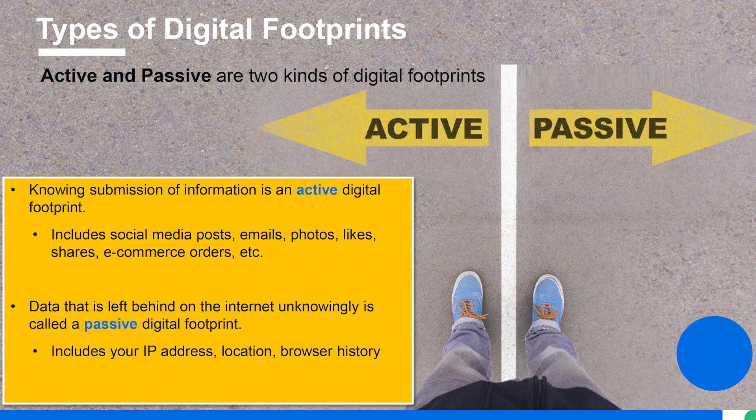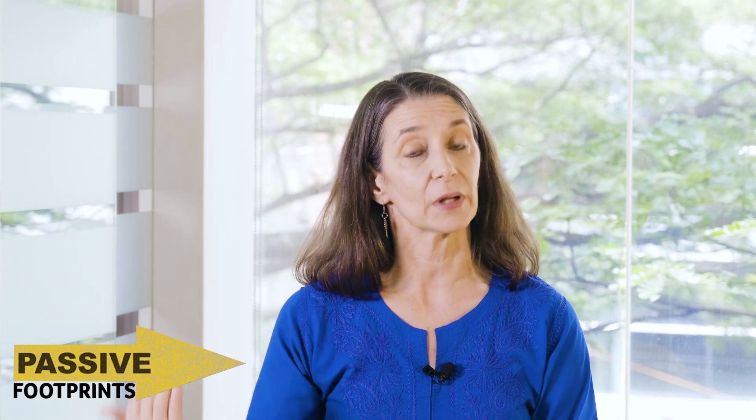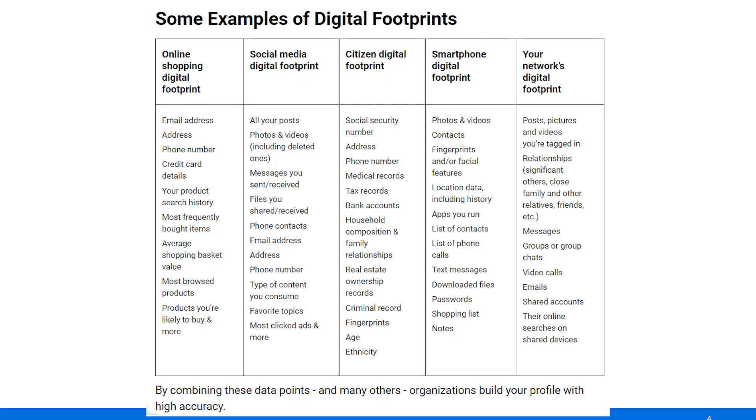The passive digital footprint is information you didn't realize you were sharing when going online — things like your IP address, which is linked to your location, information about the device you're using, your browser, your search history, how many times you visited a website, what you're looking up. You don't even realize they're happening, but in the background they are. Combined with your active footprints, they build a complete story about who you are, giving criminals an opportunity to use that information for the wrong purposes. Here are just some examples of all the different kinds of digital footprints you might be putting out there.